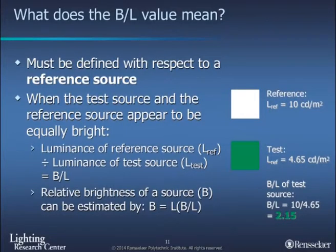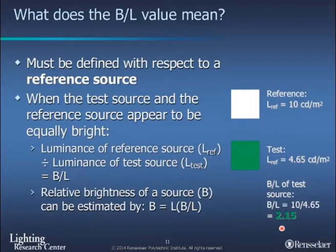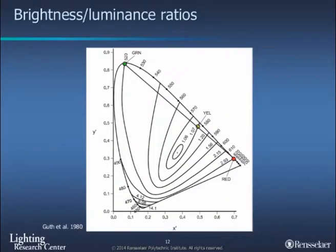To give a specific example: if we take a reference white and compare the brightness of a particular green, we can calculate — once we make an equal-brightness match — how much luminance is produced by each. In this example, we have 10 candelas per meter squared of the white, but it only takes 4.65 candelas per meter squared to make the green and the white look equally bright. So the brightness-to-luminance ratio for this particular patch of light is 2.15. We can plot that in the diagram: here's our green on this contour of 2.15. For the red light, the brightness-to-luminance ratio is 2.93, so this particular red is seen as nominally three times brighter, or only takes one-third of the luminance to equal the brightness.